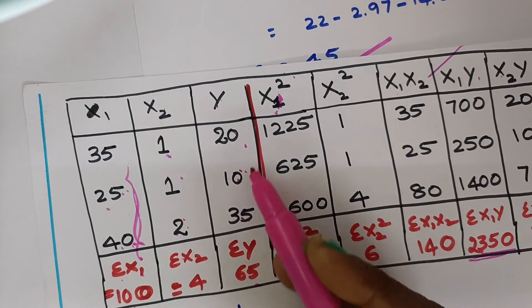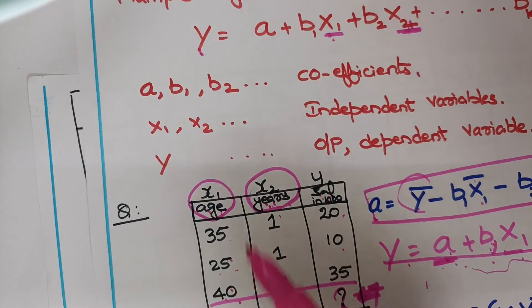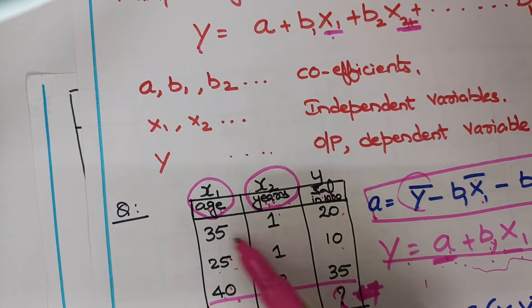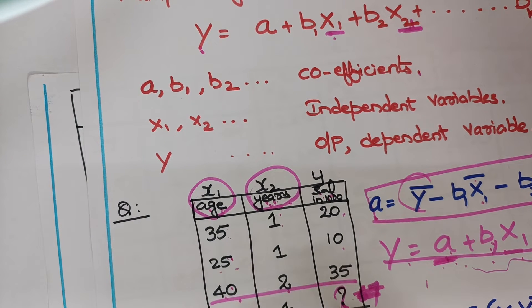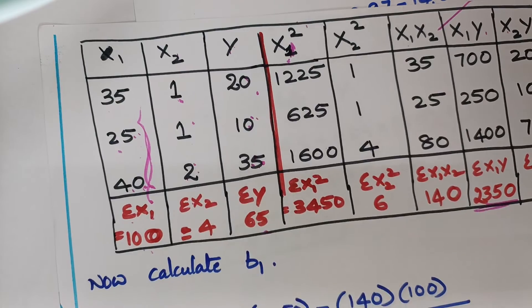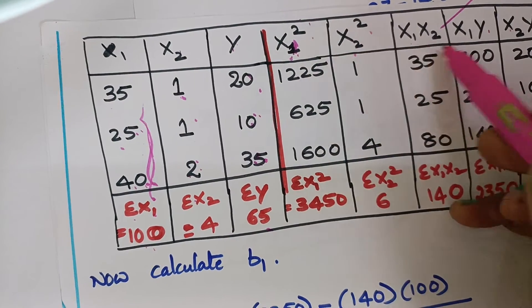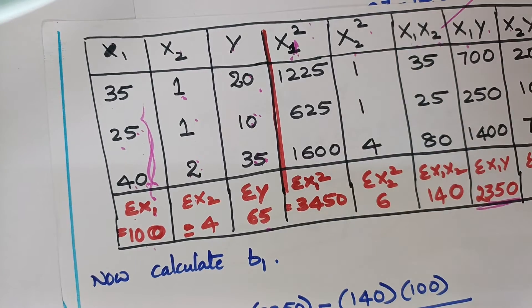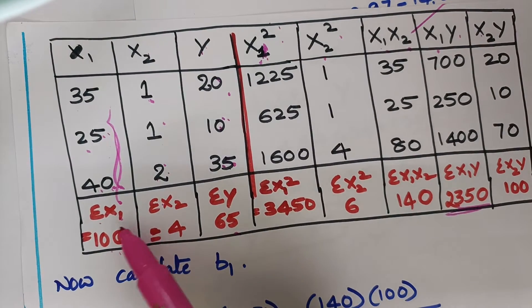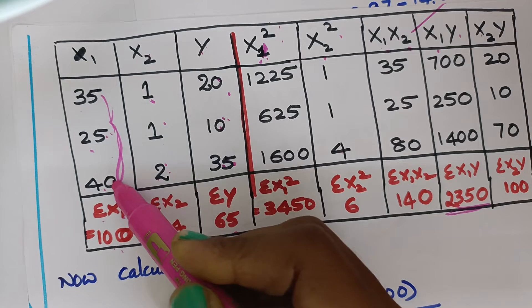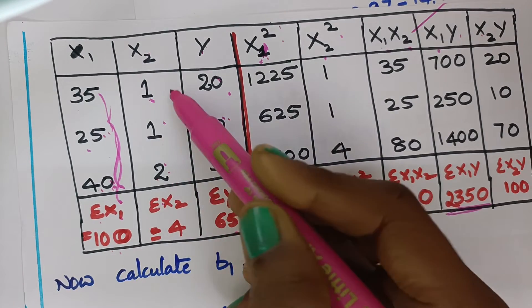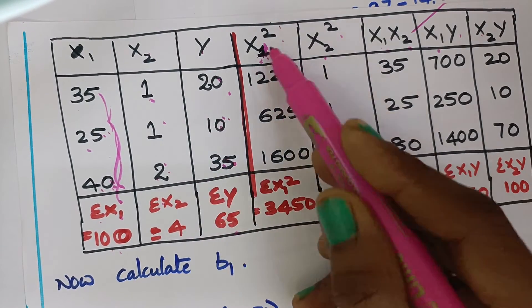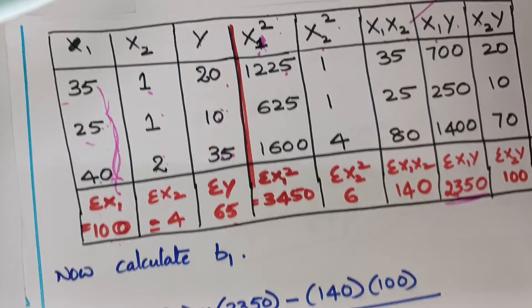Here x1, x2, and y values are given. You need to calculate x1-squared, x2-squared, x1·x2, x1·y, x2·y and so on. Summation x1 means the addition of all x1 values. Summation x2 means the addition of all x2 values. x1-squared means 35×35, 25×25, and so on.